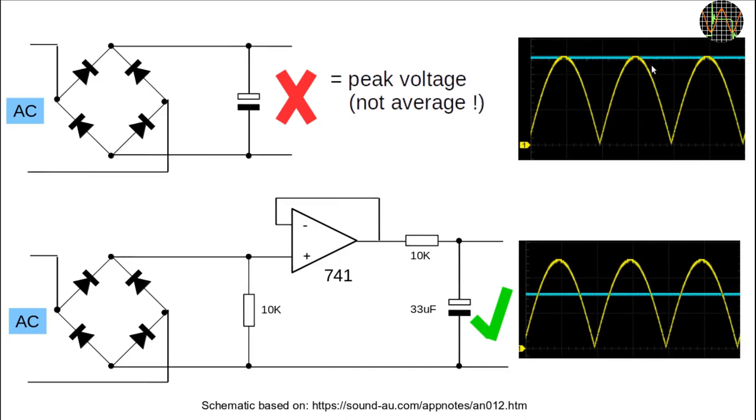One last note on these schematics. Of course, better digital averaging multimeters don't use a simple full bridge rectifier at the input because of the voltage drop across the diodes. They use another couple of op-amps to create a precision rectifier but the principle is still the same.